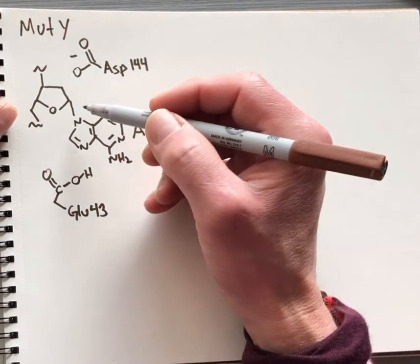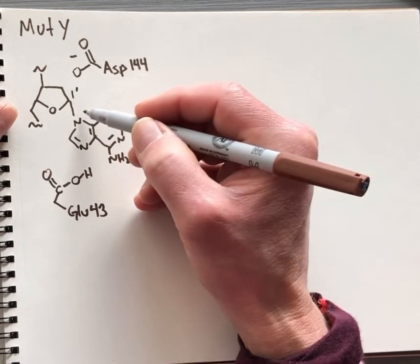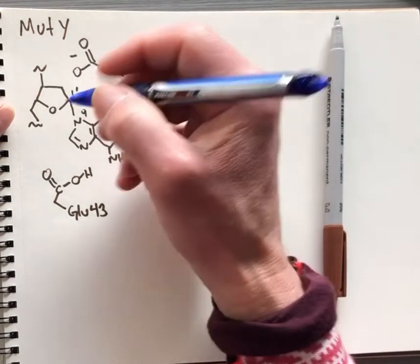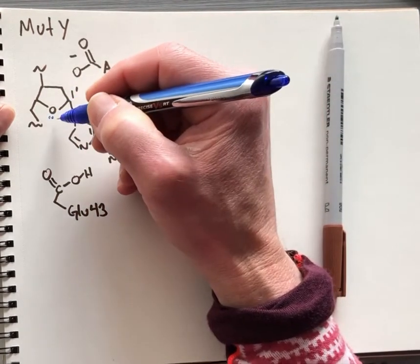We're now going to see how they contribute to breaking of this bond between the carbon at the one prime position and the nitrogen at the nine position in the base. We'll use so-called arrow pushing to illustrate how that works.